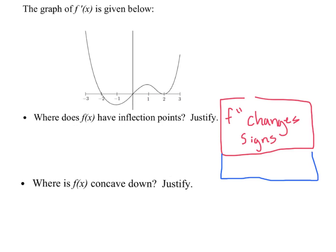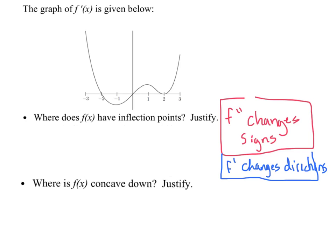If f double prime changes signs, that means f prime changed directions. So, where does f prime change directions? Right around negative one, right up at positive one, and right here at two — I'm rounding a little bit; it might be 0.9 or negative 1.1. So, we have inflection points at negative one, positive one, and two. Any time f prime changes directions, f double prime would have changed signs.